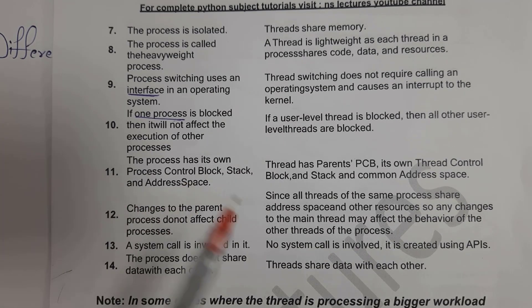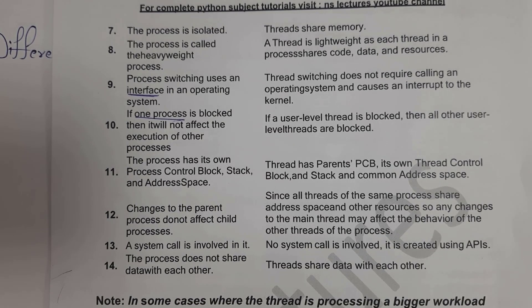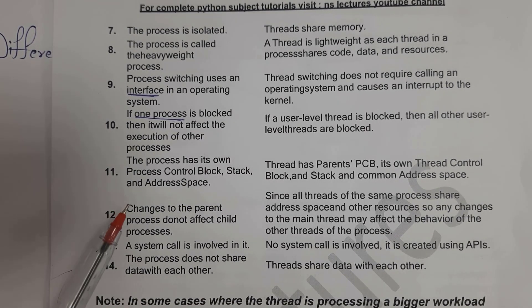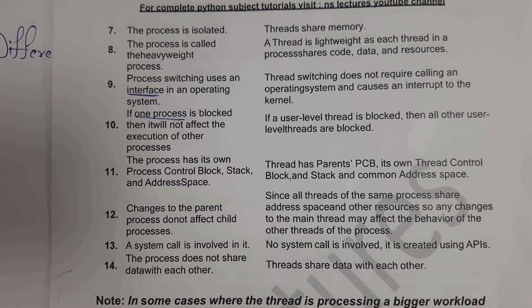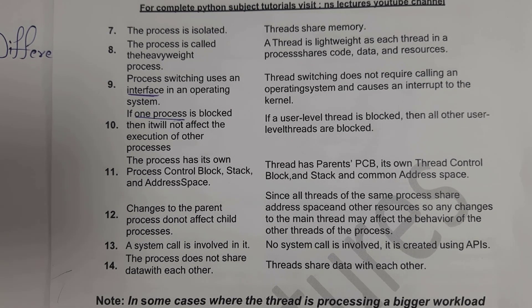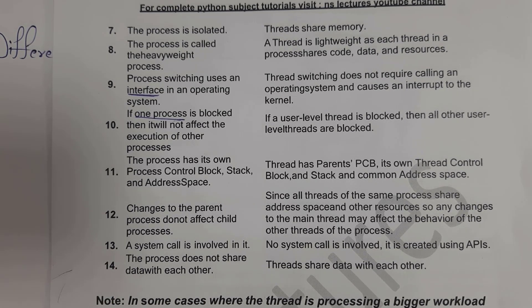A process has its own process control block, stack and address space, whereas a thread does not contain a process control block, stack and address space. Whatever changes are made to a parent process will affect the child process, whereas any changes made to the main thread will affect all other threads. In a process we use system calls, whereas in a thread we do not use system calls. A process does not share data with other processes, whereas a thread can share data with other threads.